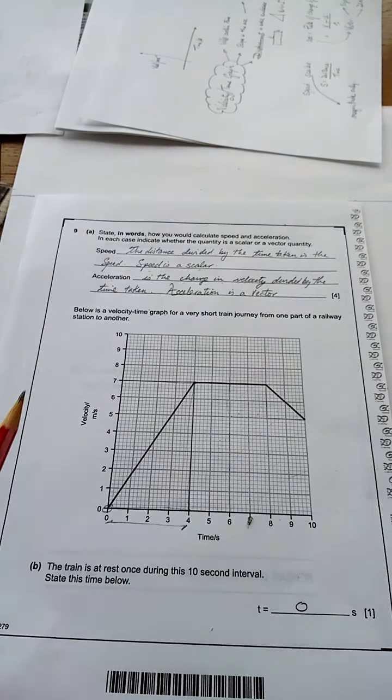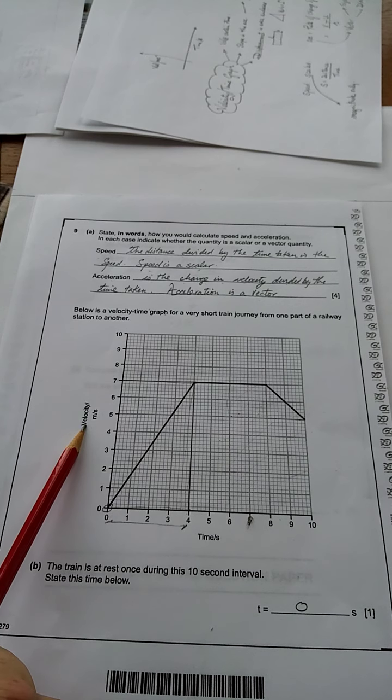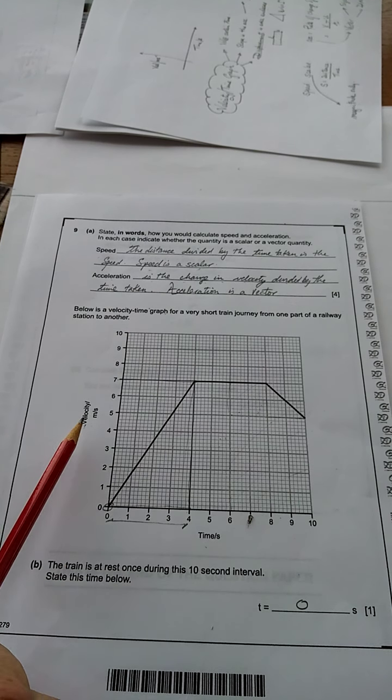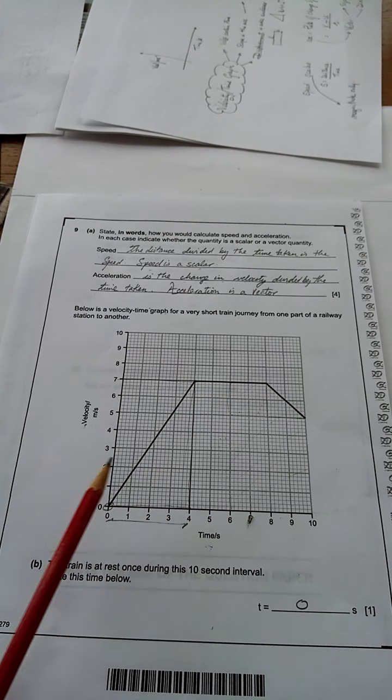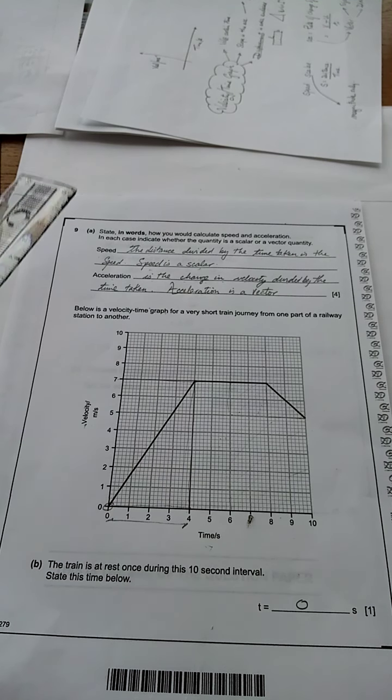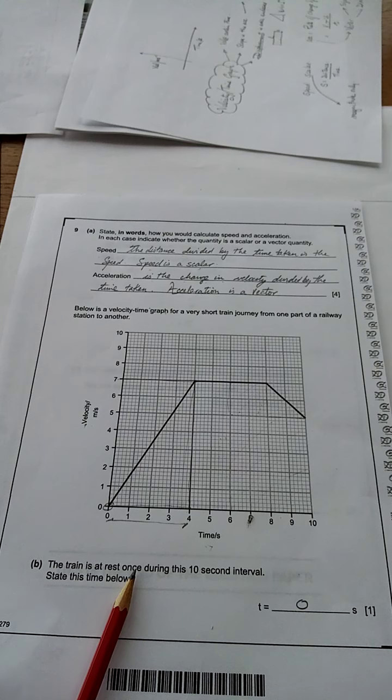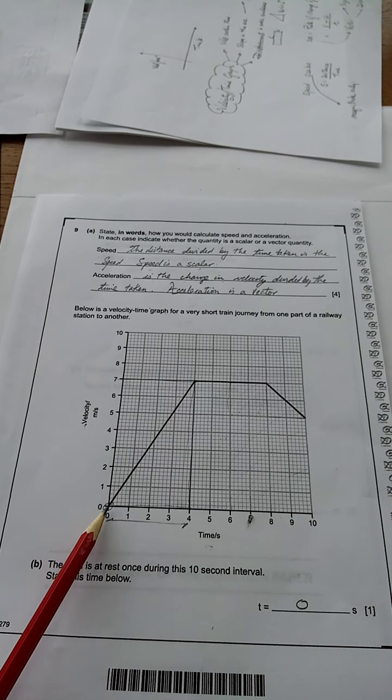Below is a velocity time graph. How do I know it's a velocity time graph? Because it's got velocity here. It's time here. Velocity of meters per second. Time in seconds. You can read off the graph using the ruler. The train is at rest once. At rest means it's not moving. It means it has no velocity. When is it no velocity? There. Time zero.